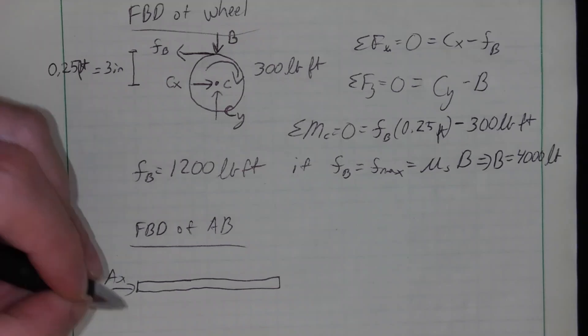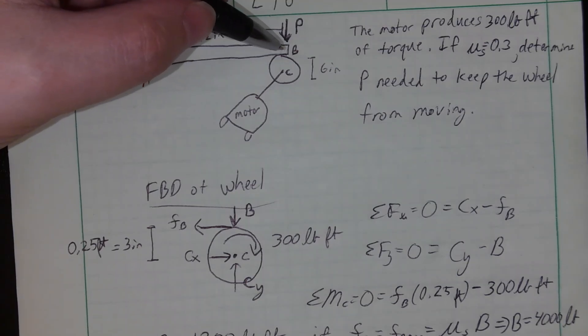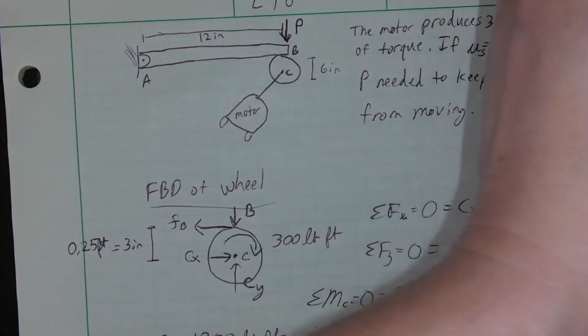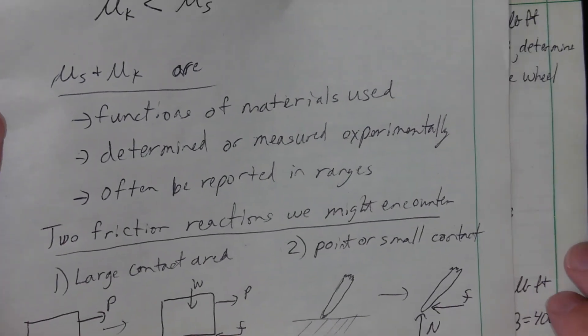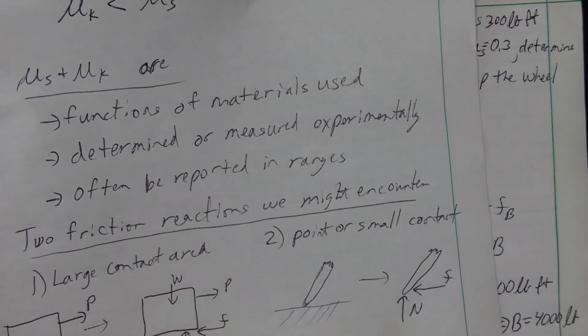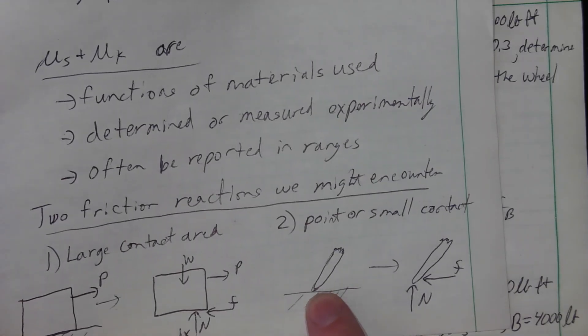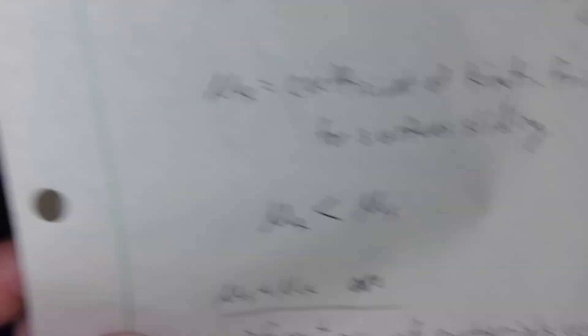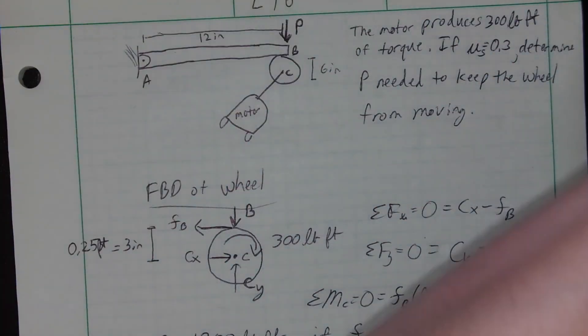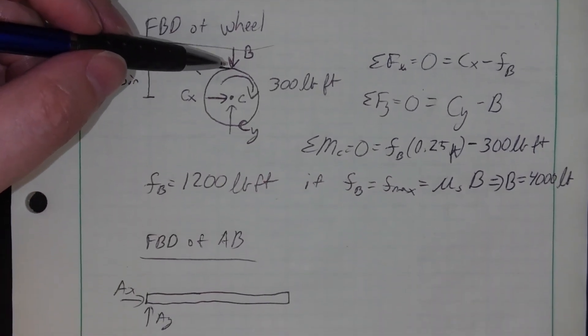So if I just look at AB and I look at the forces applied to AB, well I've got a pin here at A. That's easy: AX, AY. I've got a rough point of contact here. And remember we said back a few lectures ago, we said that if I've got a single point of contact, I've got the brake drum on one side, I've got the beam on the other. You've got a normal force and a friction force resisting the sliding motion. So that's what we're looking at in this case.